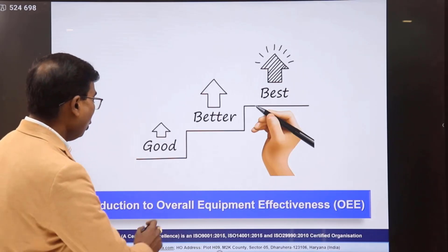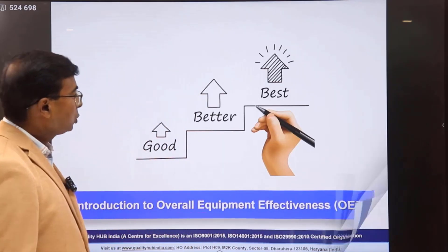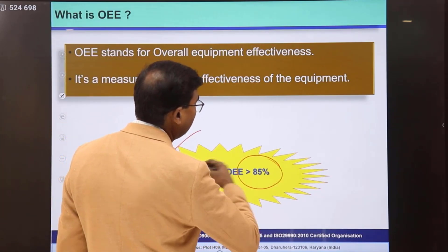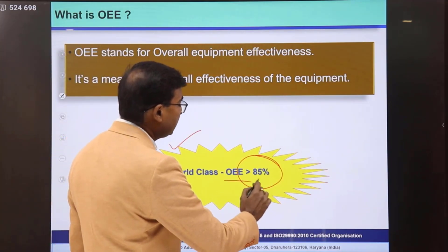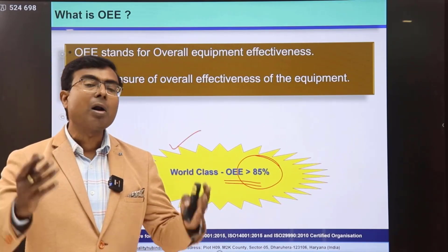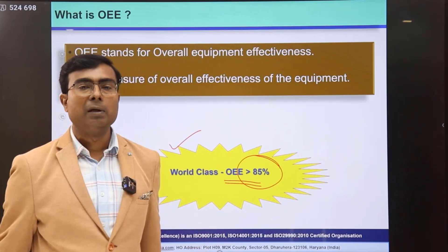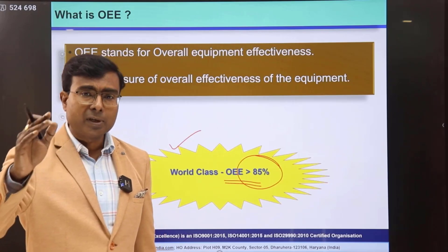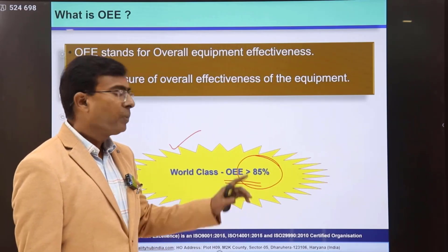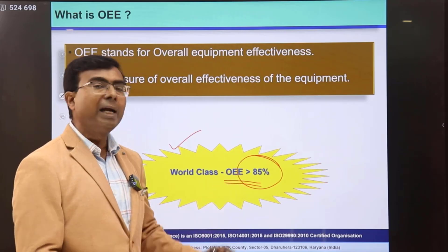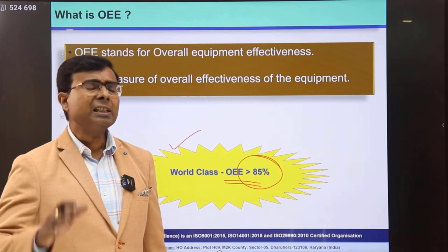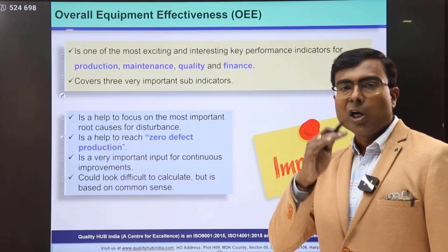So what exactly is Overall Equipment Effectiveness? The world-class level for OEE is higher than 85%. If your machine's OEE is 85% or more, you can say that particular machine, assembly, or line is operating at a very optimum level. It doesn't mean there is no opportunity for further improvement — the ultimate aim should be 100% — but if your OEE is beyond 85%, you are working at a very convenient, optimum, world-class level.